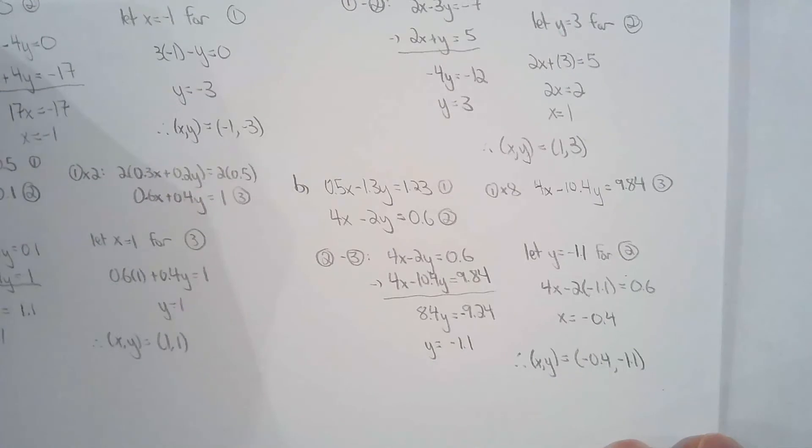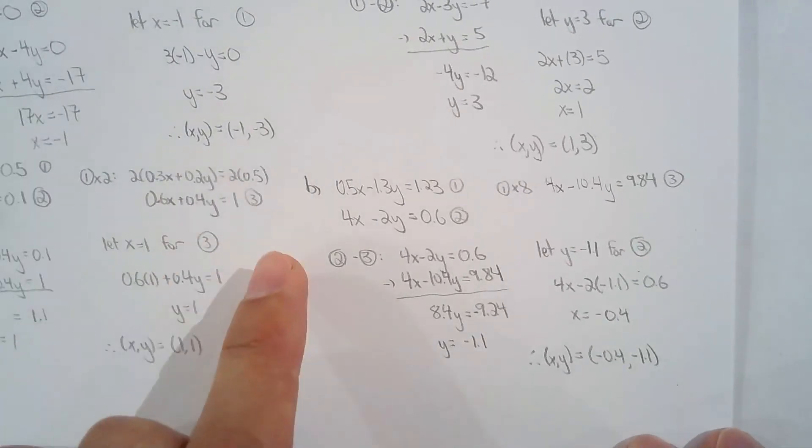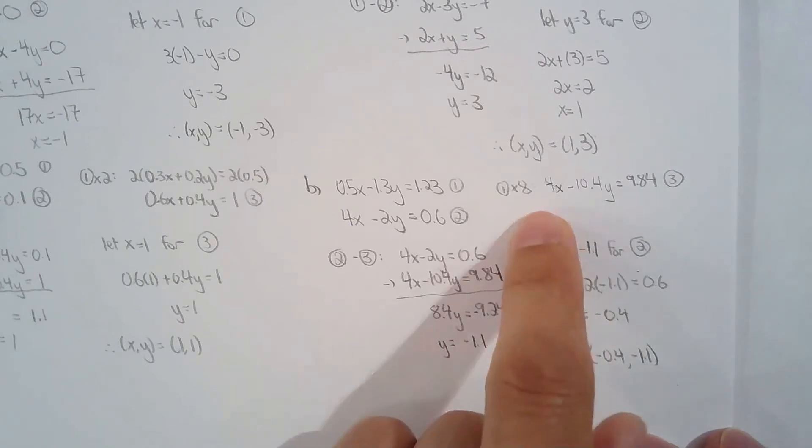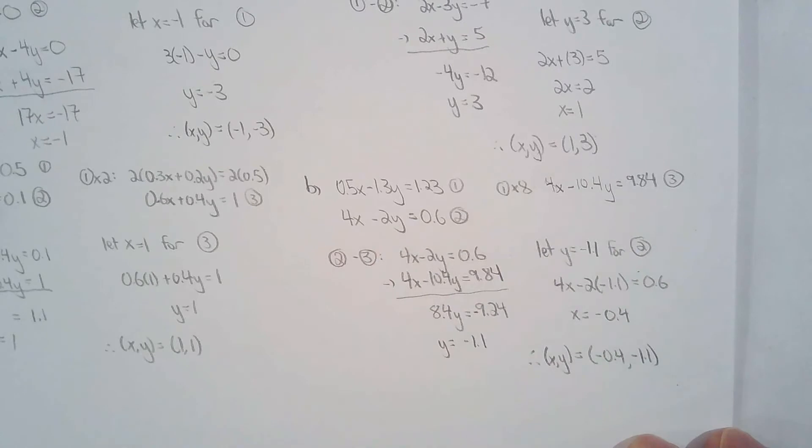For 3b, once again, I'm okay with decimals. So you could have a different strategy, but I just chose to take equation one and multiply by eight and that will give me 4x so I can eliminate x.